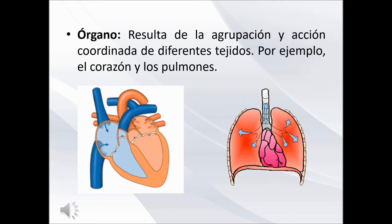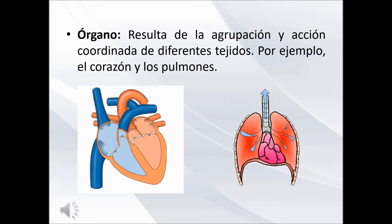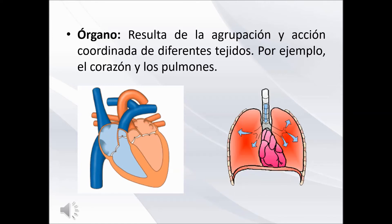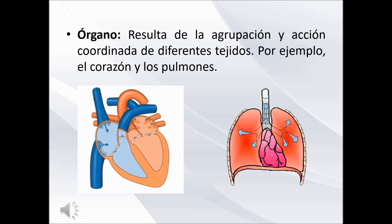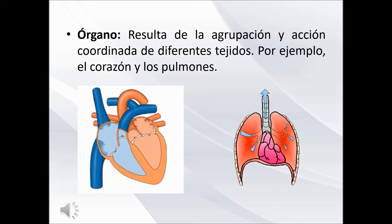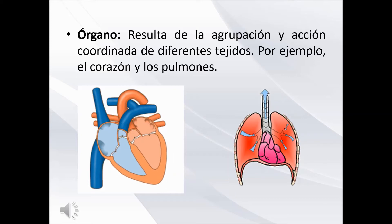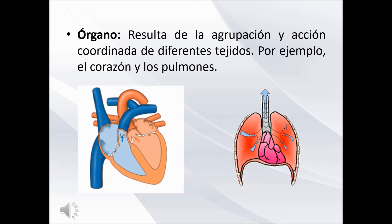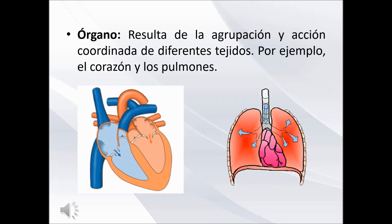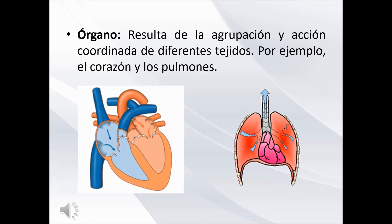El tercer nivel de organización corresponde a los órganos. Los tejidos no están aislados. Un conjunto de tejidos que realizan una función determinada se agrupan y forman un órgano. El estómago es un órgano que se compone de distintos tipos de tejidos, como el epitelial, que lo recubre por dentro, el tejido muscular, que lleva a cabo los movimientos para mezclar los alimentos con los jugos gástricos, y el tejido nervioso, que envía y recibe información.